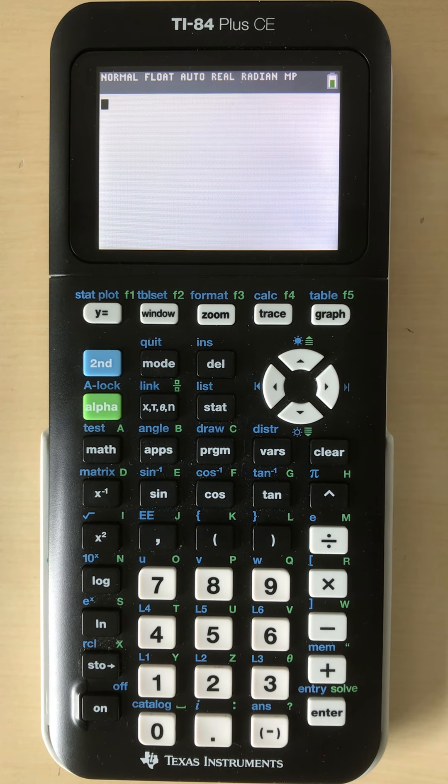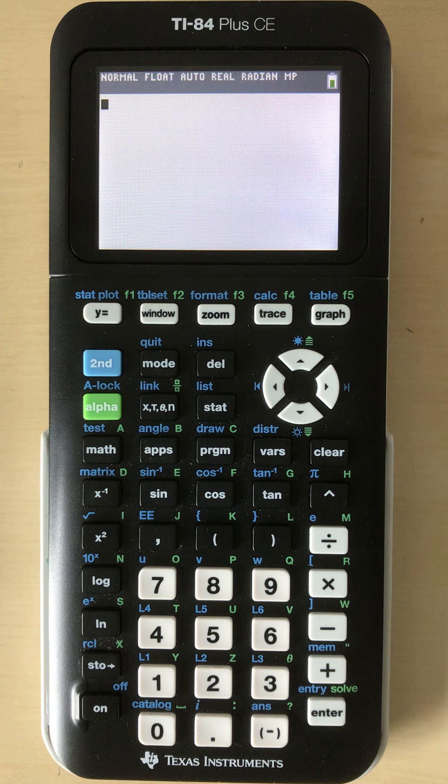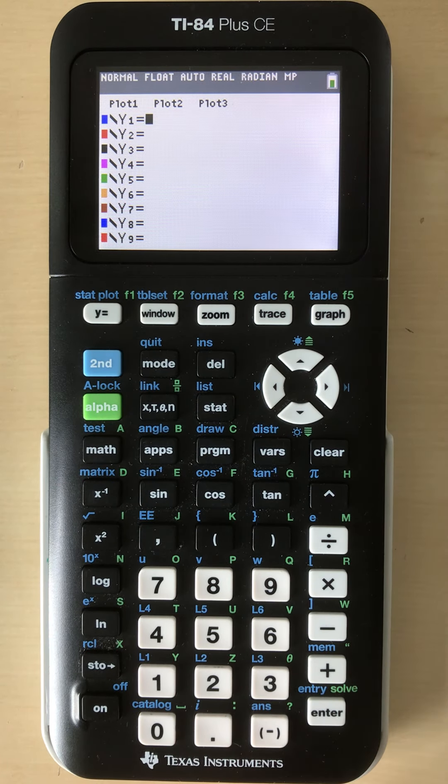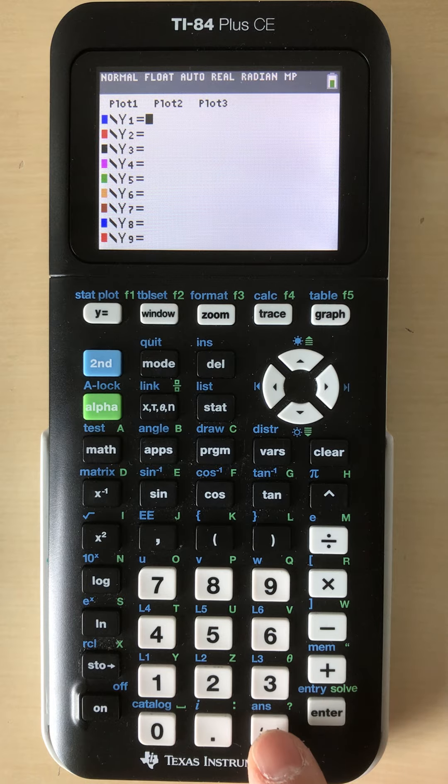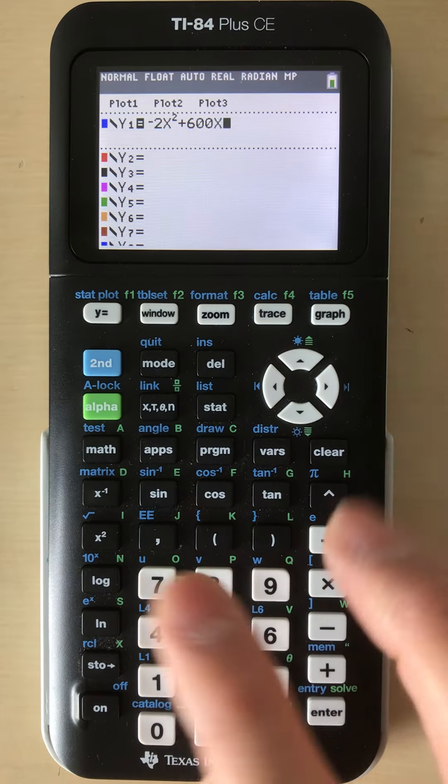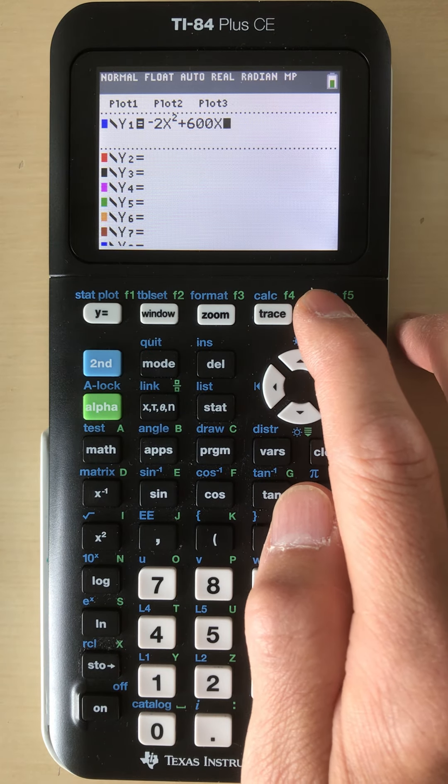For another area perimeter maximization problem, we are left with an area function of negative 2x squared plus 600x. We're asked to graph it, so here we go.